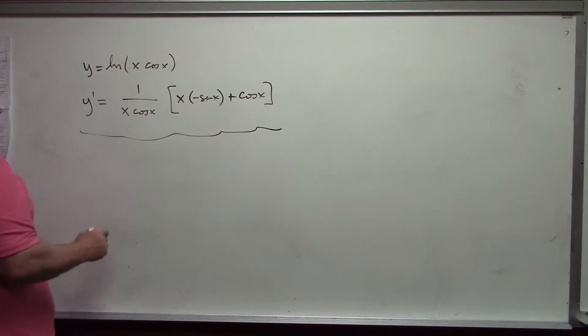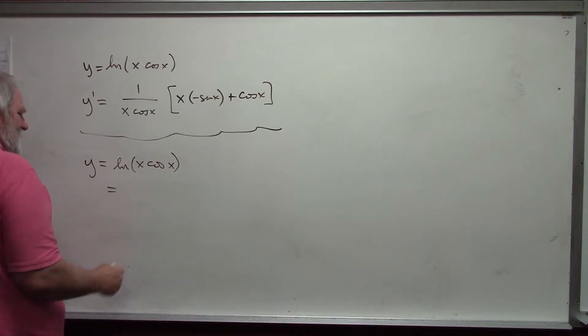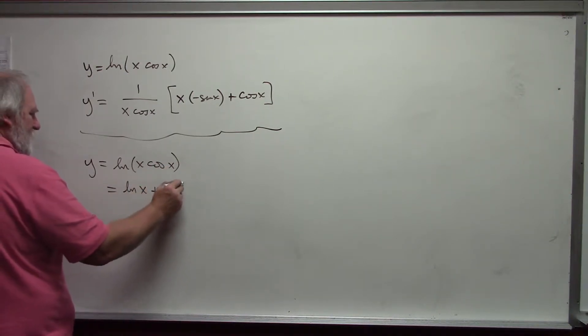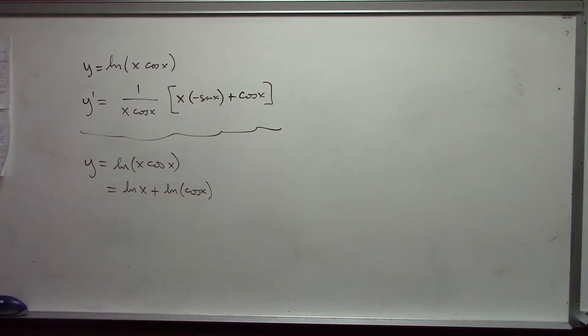Notice there's another way of doing this same value. I could use rules of logarithms. Remember your rules of logarithms. Y equals the natural log of x cosine of x is the same as the natural log of x plus the natural log of cosine of x. Natural log of a times b is the natural log of a plus the natural log of b.